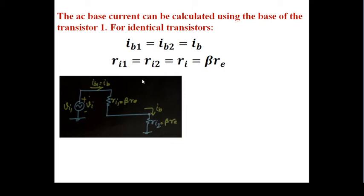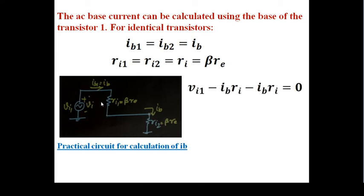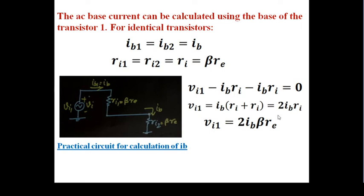To find ib1, we write the KVL equation: VI minus ib times beta*re minus ib times beta*re equals zero. So VI1 equals twice times ib times beta*re, giving ib equals VI1 divided by 2 times beta*re. Putting in the value of ri as beta*re, ib equals VI1 divided by 2ri.